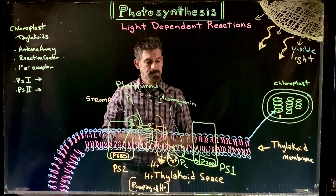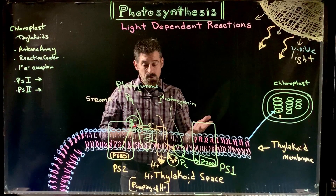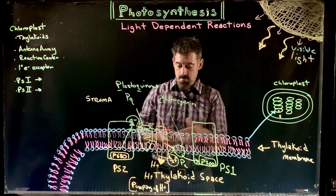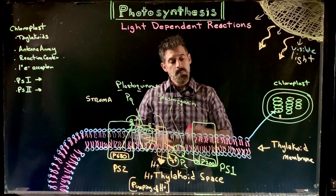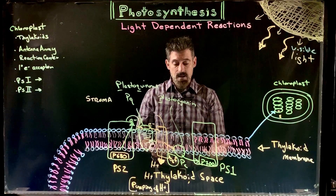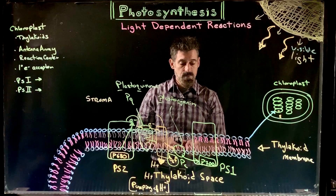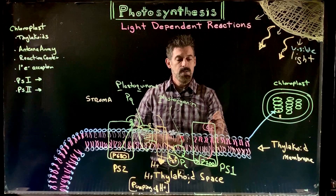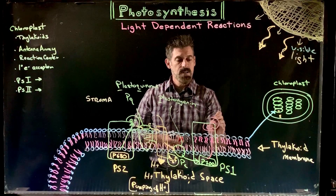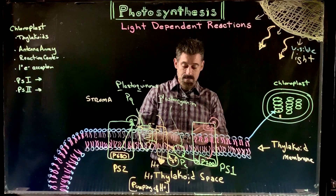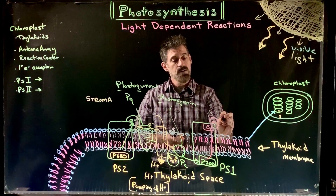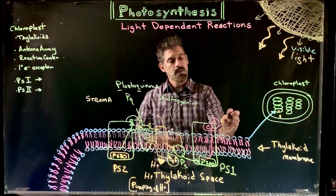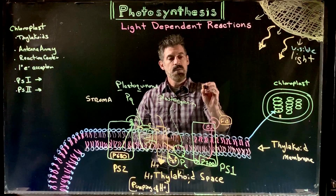The job of plastocyanin is to give those electrons to the reaction center called P700 — this is Photosystem 1. Every photosystem has certain things happening: the pigments gather energy, channel it to P700, the P700 electrons get pushed up to a high energy state, go to the primary electron acceptor, which then gives them to a molecule called FD — ferredoxin.